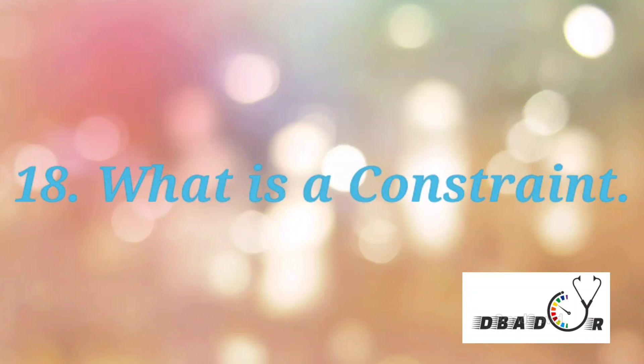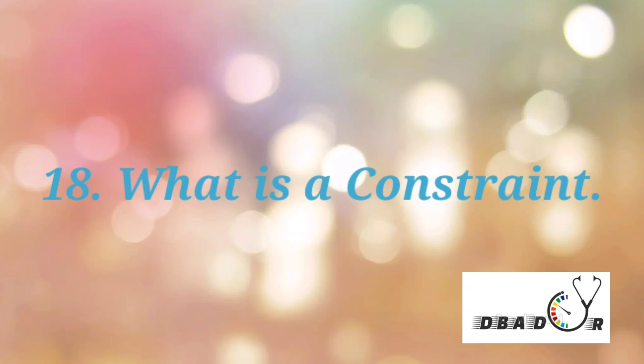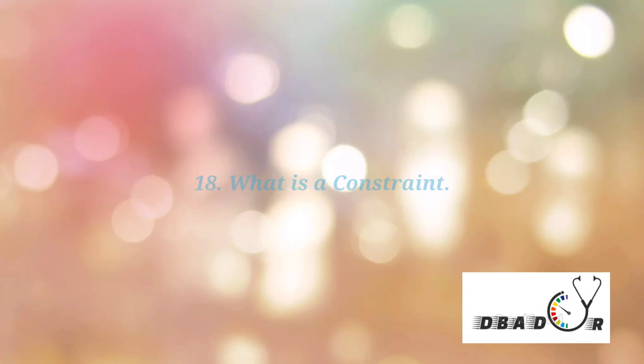Next, what is a constraint? A constraint can be used to specify the limit on the data type of a table. Constraints can be specified while creating or altering the table statement. Examples of constraints: NOT NULL, CHECK, DEFAULT, UNIQUE, PRIMARY KEY, FOREIGN KEY.